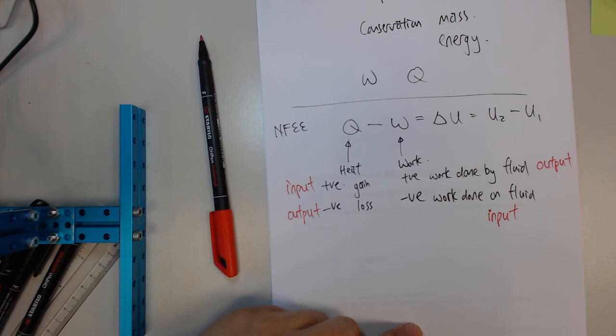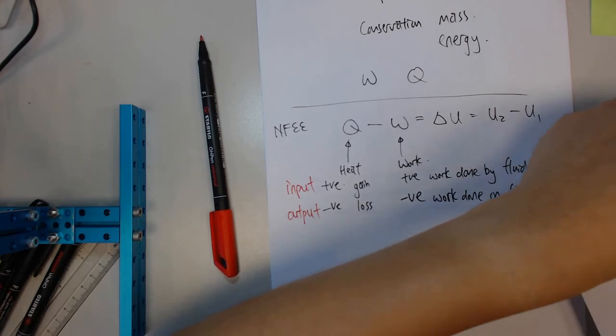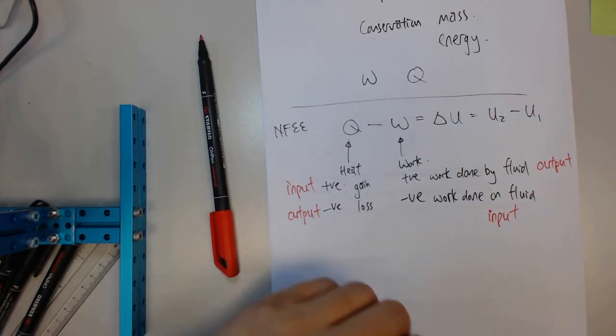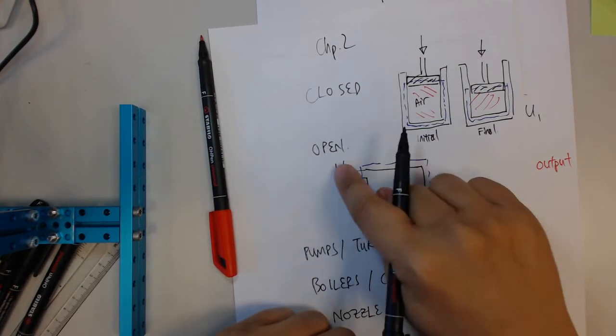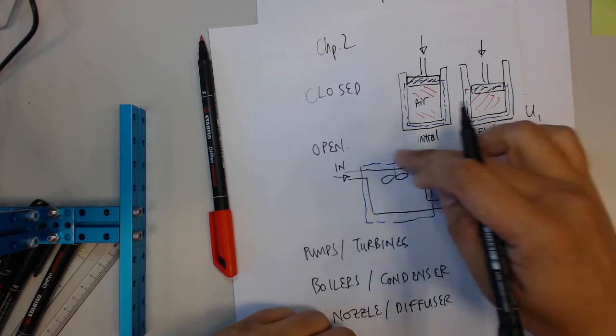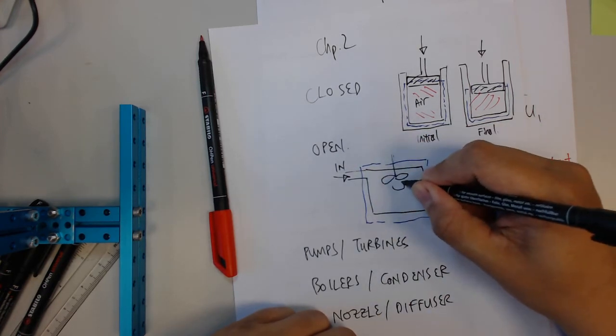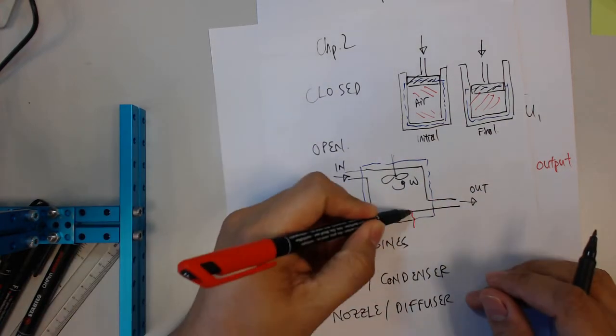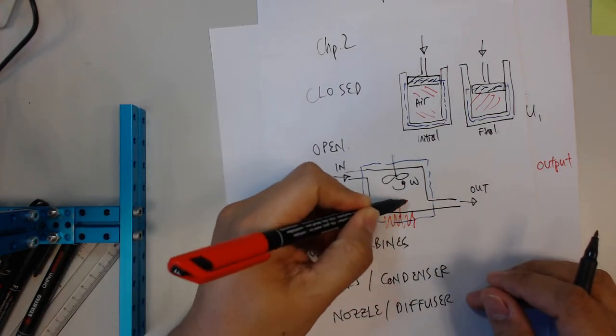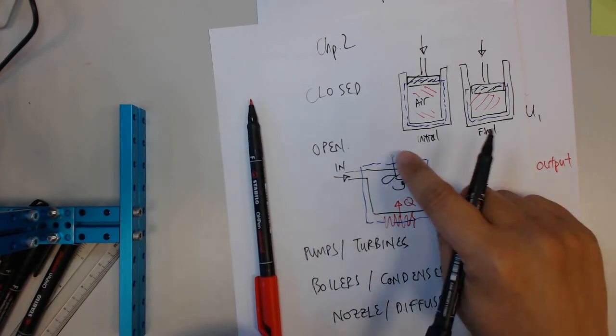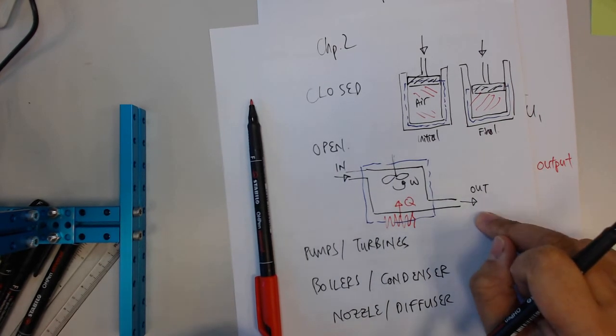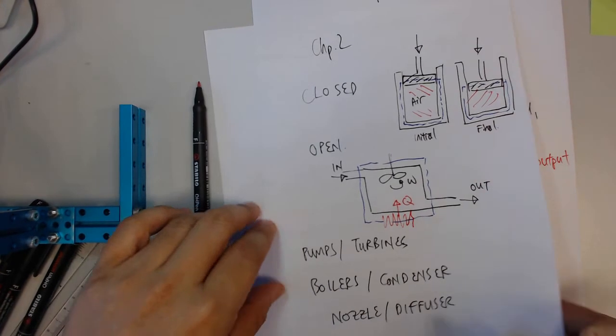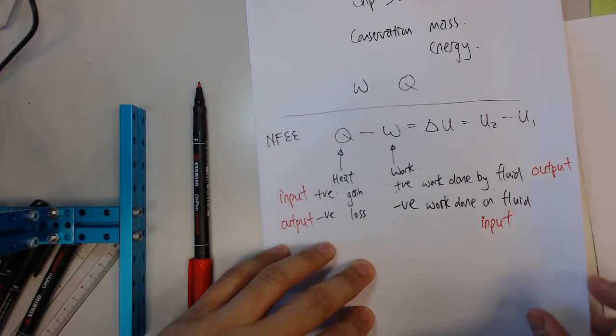So this is about the closed system energy equation. The open system energy equation is slightly more complex. So when we look at the open system from chapter 2, as it comes in, something is going to happen within this boundary. It can be in terms of work, or some heat can be provided to the system.